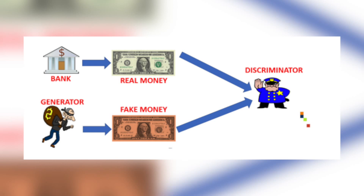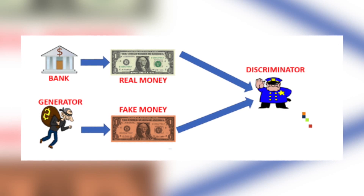When I say real images, that means dollar bills that have been generated by the bank. The discriminator network, which is the police in this case, is being trained to determine if a dollar bill is real or fake. The counterfeiter is trying to fool the police by pretending he generated a real dollar bill, but the discriminator will detect the fake money and provide feedback to the generator on why it thinks the money is fake.